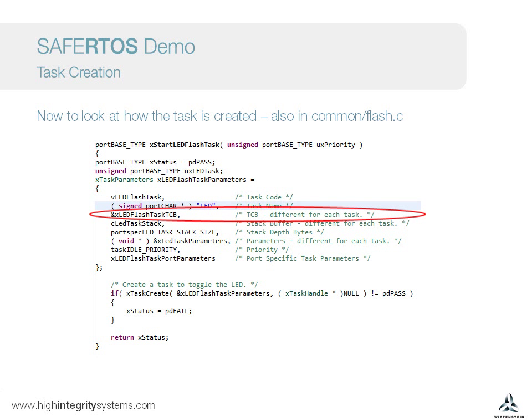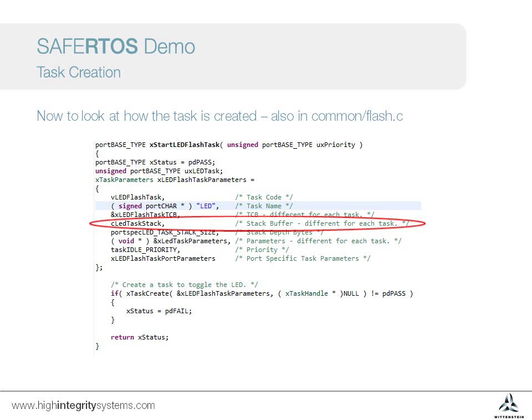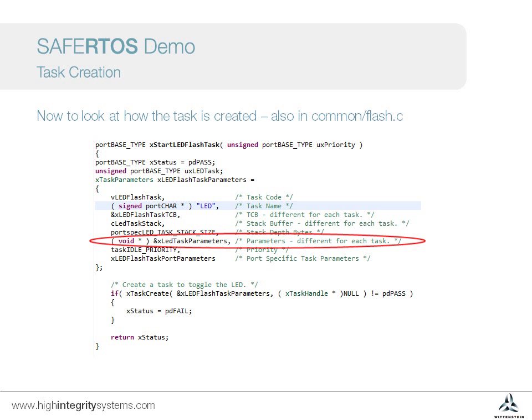Next we have a TCB, or task control block. This is used by SafeRTOS to track states relating to the task, such as stack pointers and whether the task uses the floating point unit. Each task is likely to require some stack, and as a safety system component SafeRTOS does not support dynamic memory allocation, so each task requires a stack buffer, as well as telling the RTOS how large this is. Then we can provide a structure containing arguments to the task function. Each task has a priority, ranging from idle priority, which is the lowest in the system, to any level of higher priority.